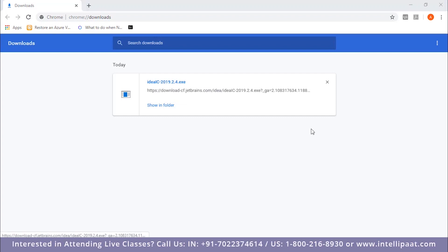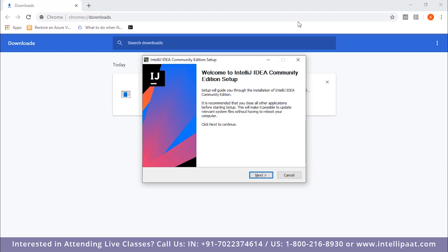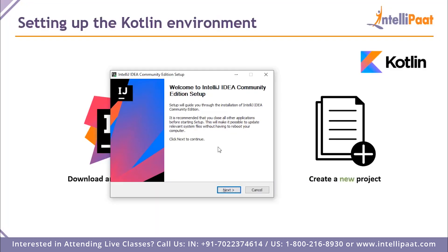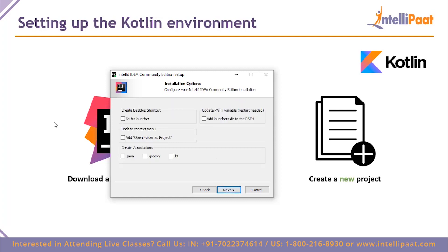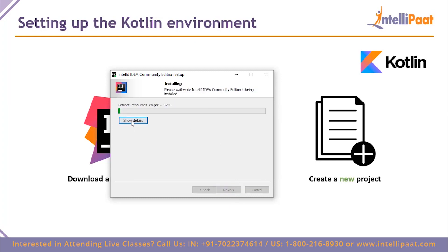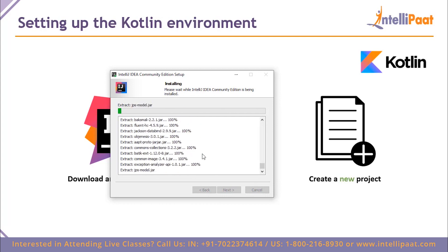That took about under a minute to download. To set up IntelliJ IDEA, you'll need admin access — enter your administrative password to begin. Hit Next on the first screen, select the destination folder (the default C drive path is fine), then check whether your system is 32-bit or 64-bit. Since I have a 64-bit machine, I'll select the 64-bit launcher option and hit Next, then Install. This takes a couple of minutes.